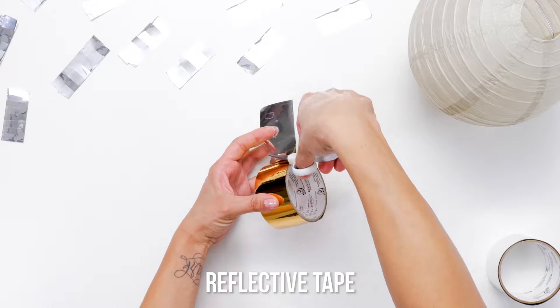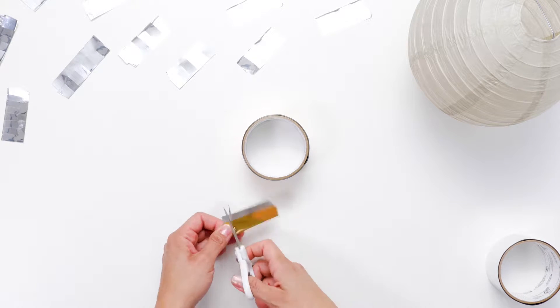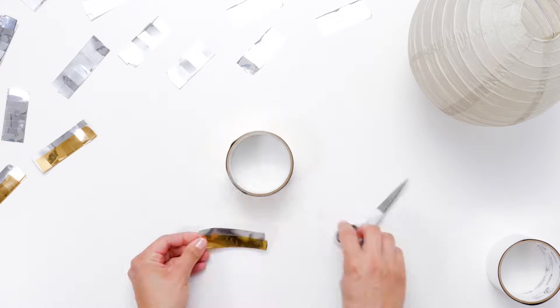Cut a piece of tape about four to six inches long and fold it over, leaving about a third of the sticky part of the tape exposed. Cut each folded strip of tape into one to two inch pieces.